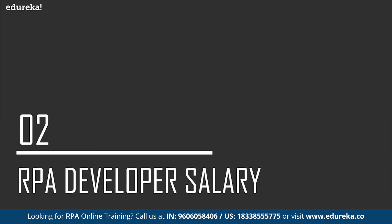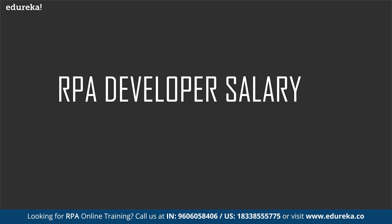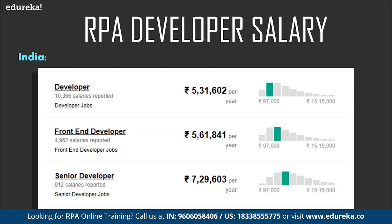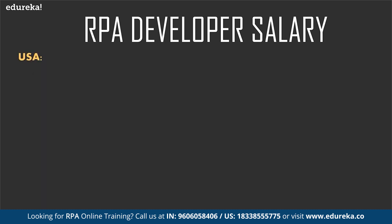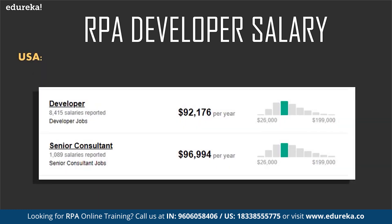Let's look into the RPA developer salary. According to indeed.com, estimated from around 30,000 employees and past and present job advertisements over the past 36 months, the average salary ranges from around 5,31,000 per year for a developer to 7,29,000 per year for a senior developer. In the United States, estimated from around 18,000 employees, the average salary ranges from around $92,000 per year for a developer to $96,000 per year for a senior consultant.